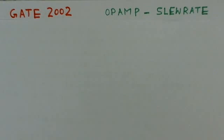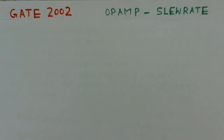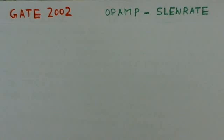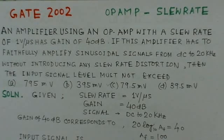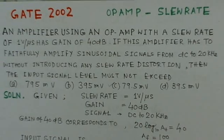After uploading the video lecture on operational amplifier characteristics, the video solutions to some related gate problems are considered. Here we will consider three problems related to operational amplifier characteristics. The first one is Gate 2002 on slew rate, the second problem is Gate 2002 on gain bandwidth product, and the third one is on common mode rejection ratio. We start with the first problem, which is Gate 2002 on the operational amplifier slew rate properties.